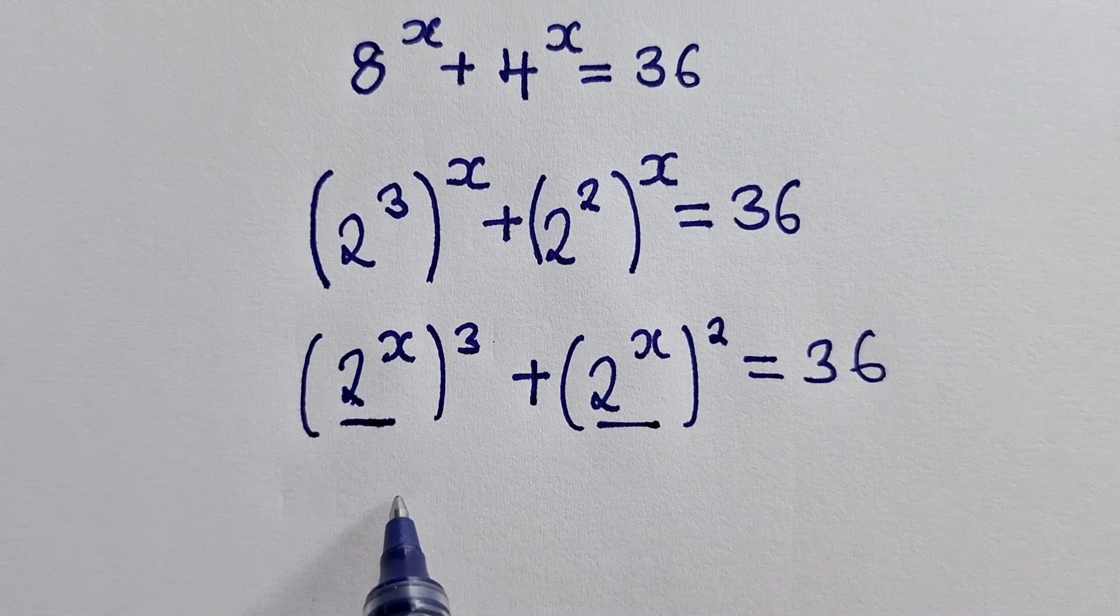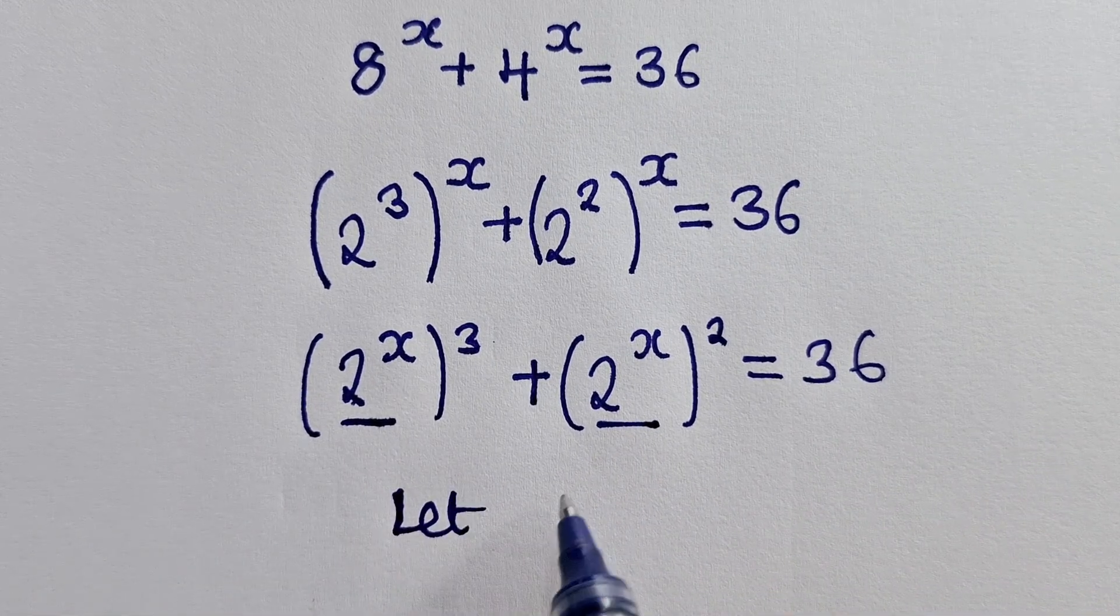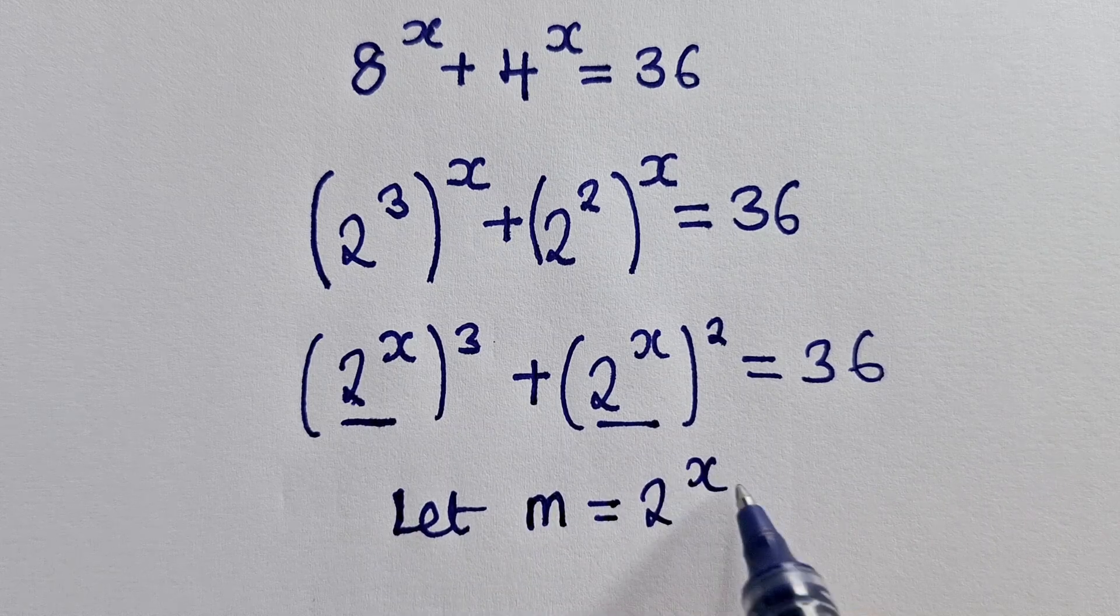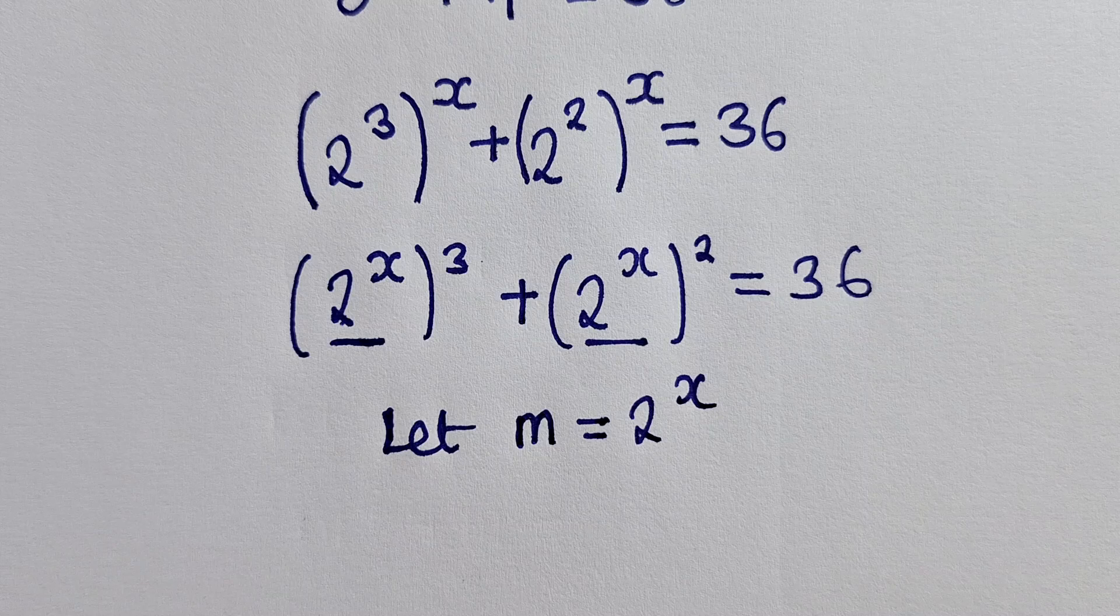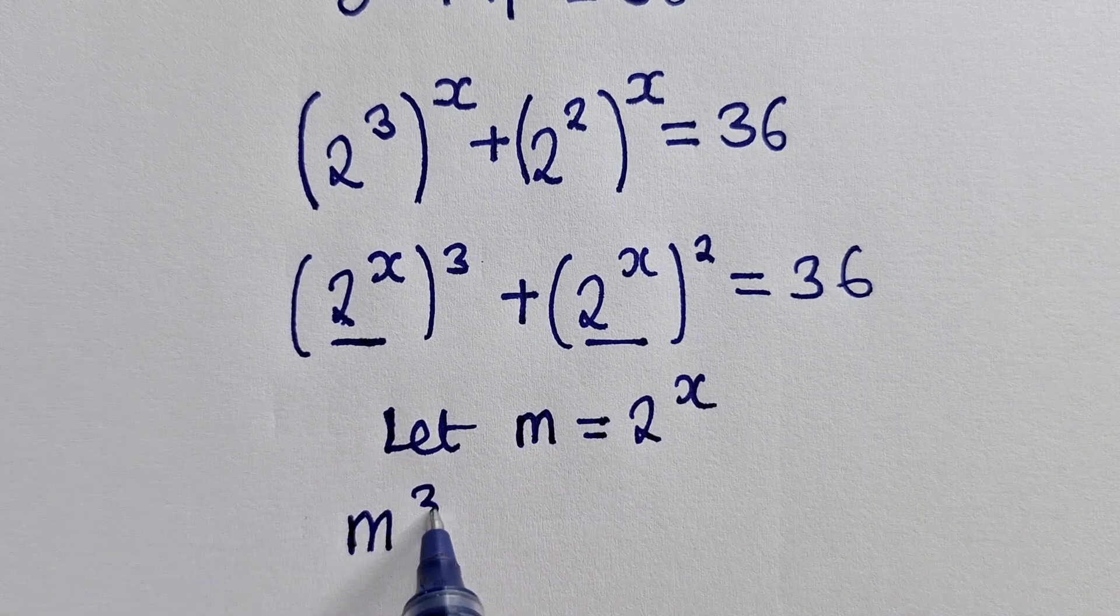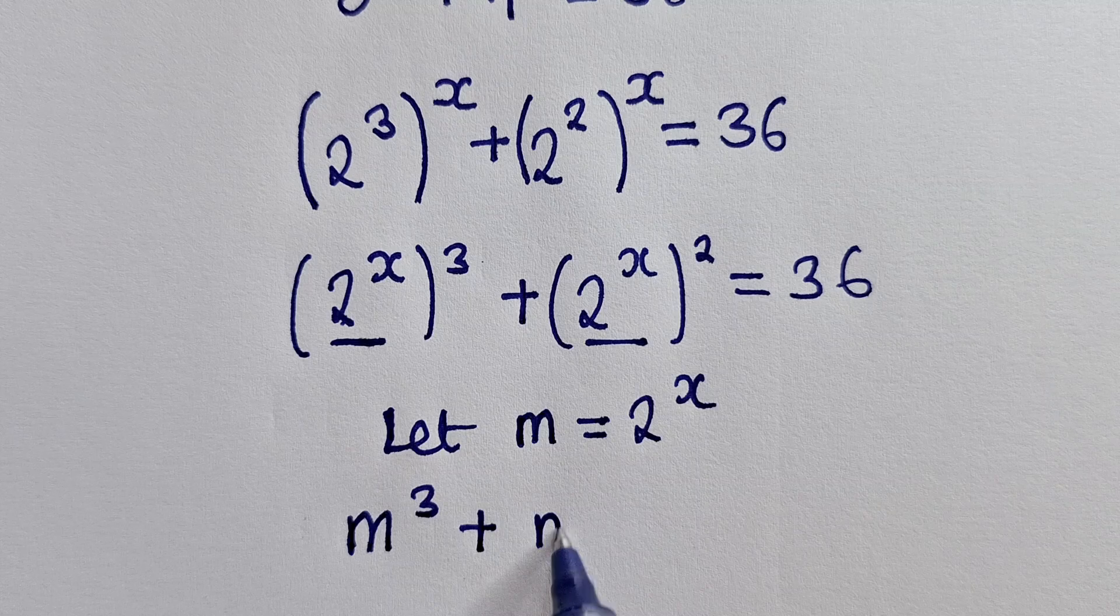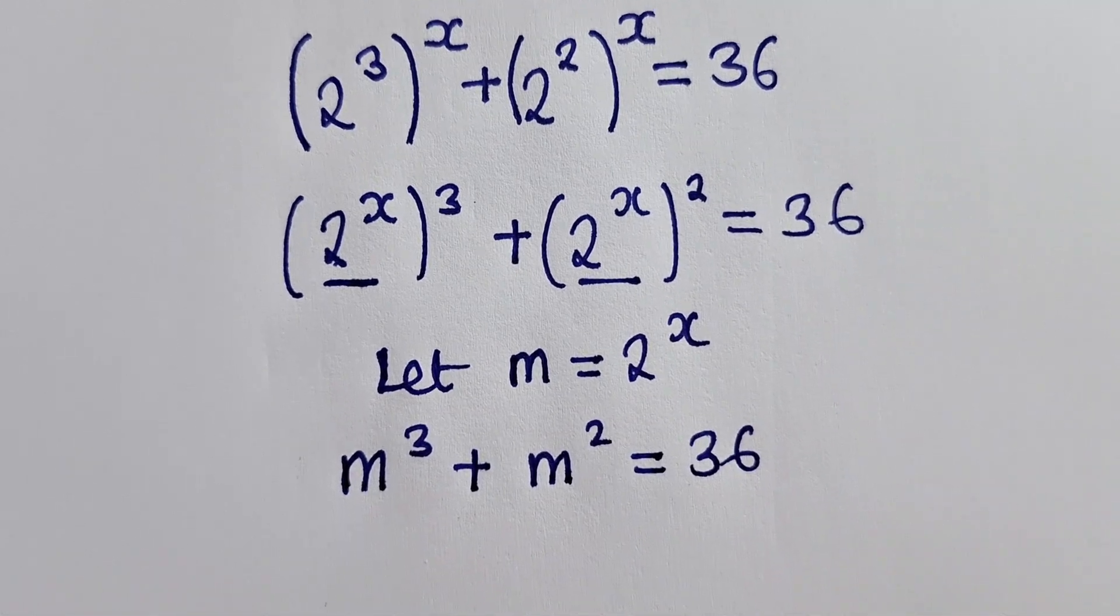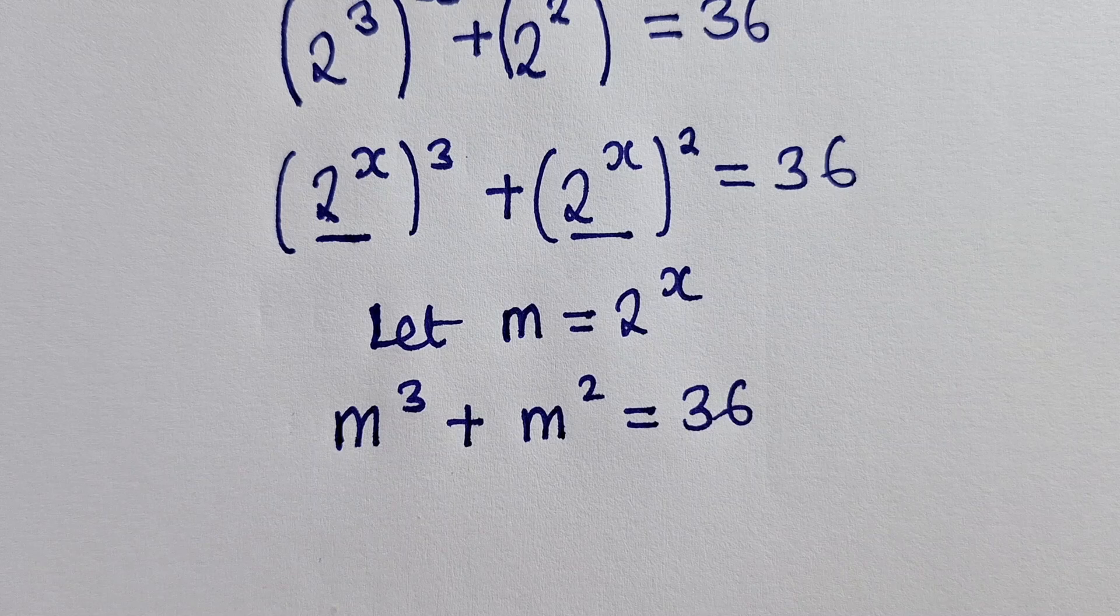So we can say let, any let of your choice, I will say m be equal to 2 power x. Okay, so after doing that, you can now substitute m, so this will be m power 3, plus m power 2, which is equal to 36. So once we get this, of course we can solve this.